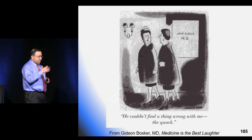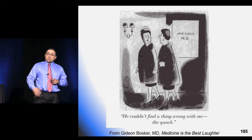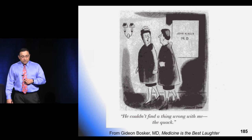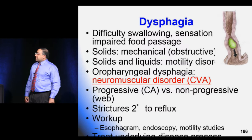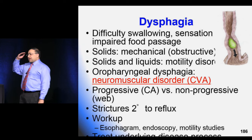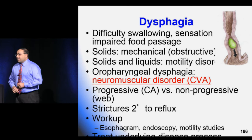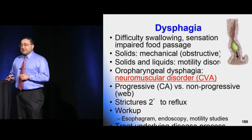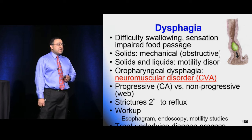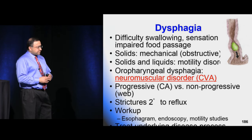Always consider deadly things first — anything that's the most common cause of this or that, circle it. Anything that's a quadrat or triad makes for very convenient board questions, so pay special attention to those. Think about every patient as someone who's about to die and you need to figure out why. We're going to start at the very top of the GI system and work our way all the way to the end.